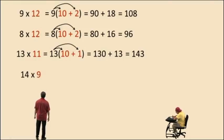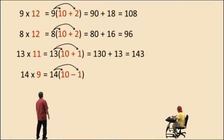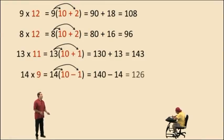14 times 9. Let's try this. Let's write the 9 as 10 subtract 1. And notice we put it in parentheses. And now we distribute. 14 times 10 subtract 14 times 1. That's 140 subtract 14, which gives us 126. That's 14 times 9. It's important to have good subtraction skills, right? Because that will help you with learning your multiplication tables.